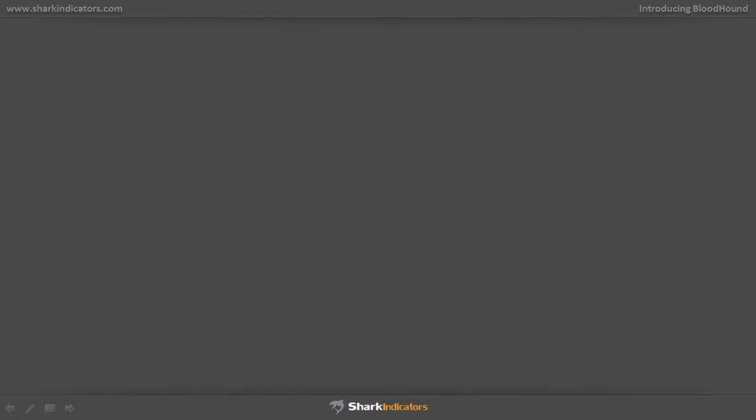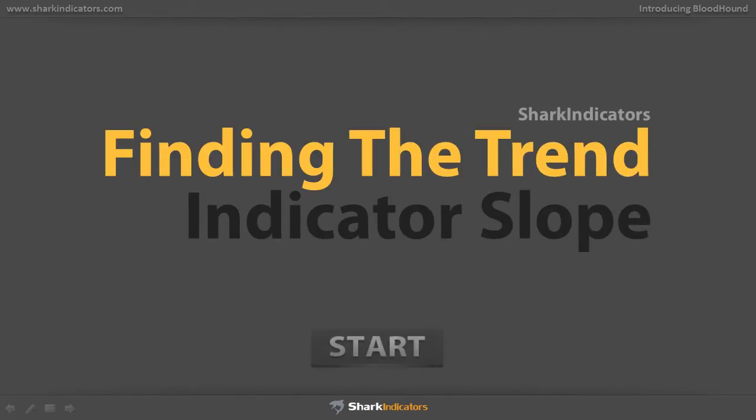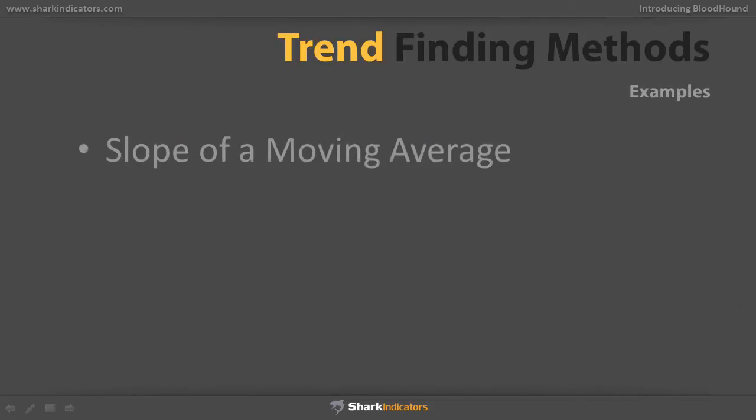In this tutorial, we're going to look at how to determine the overall trend of the market using Bloodhound. There are a few common ways that traders use to look at the direction of the trend. In general, you want to be trading with the trend, not against it. If the trend is bullish, you want to be trading mostly longs, and if the trend is bearish, you generally want to be trading short positions.